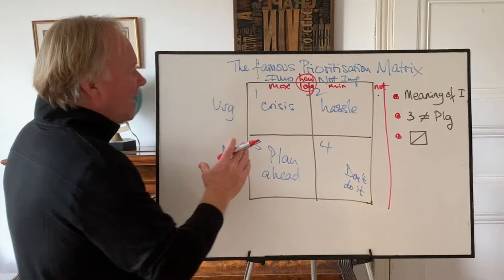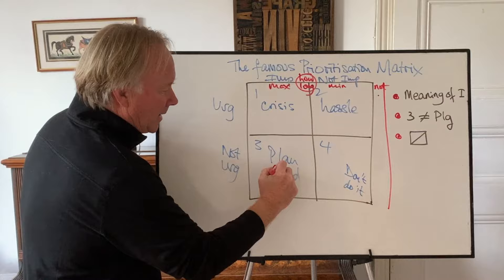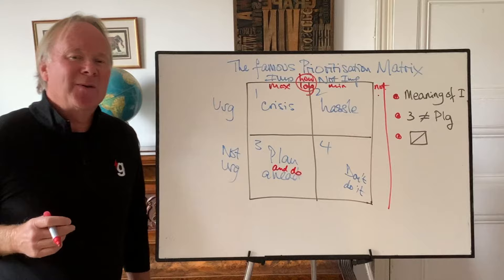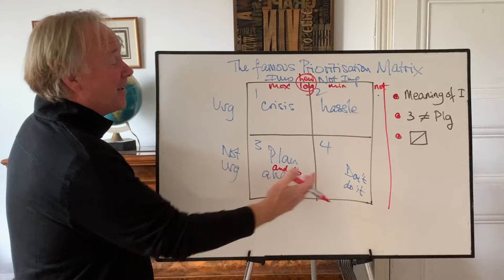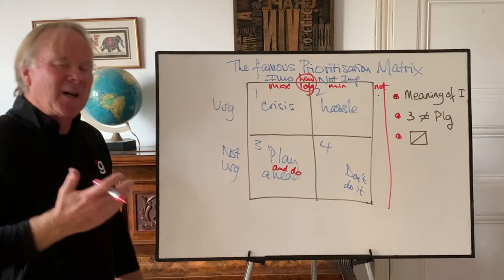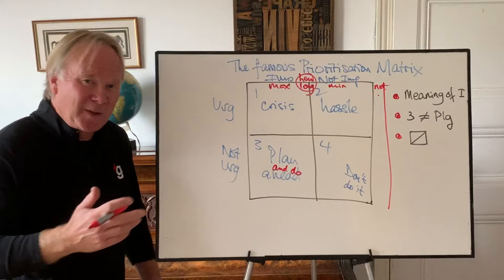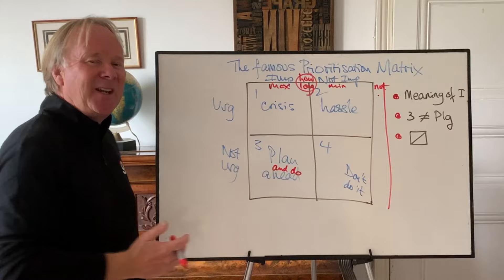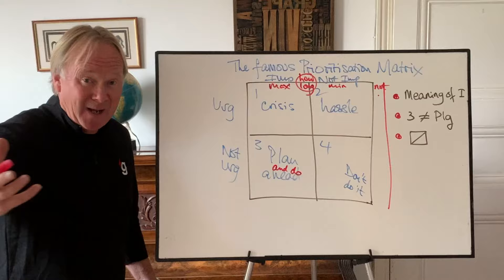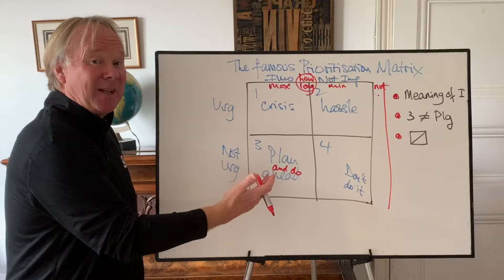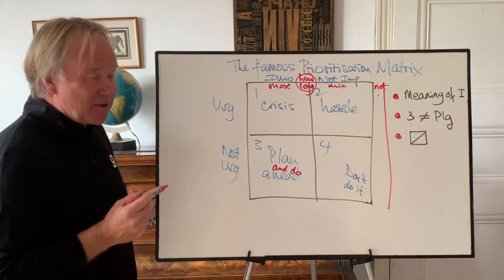The second clarification is that box three is not just planning. I want to call it the plan and do ahead box because you can be doing things in box three. Having fun is really in box three — fun is important, something we want to maximise, but it's not urgent. You might put time aside to have a meal with friends or book a tennis court, and then when you're doing it, you're in box three: doing important things in a non-urgent way. I'm filming this video now in box three — it's important, but I don't have to do it right now.